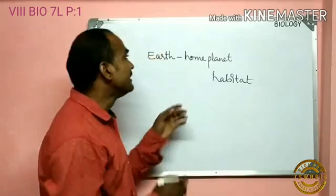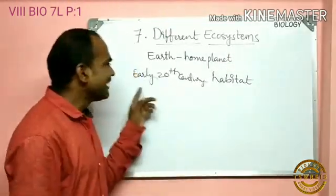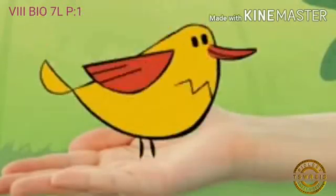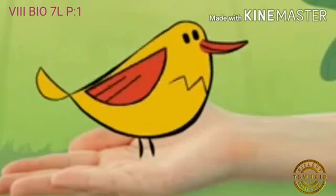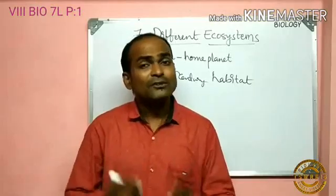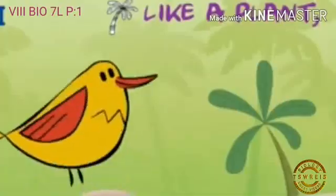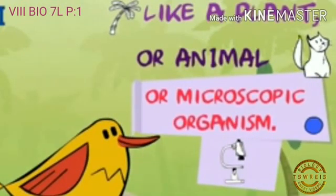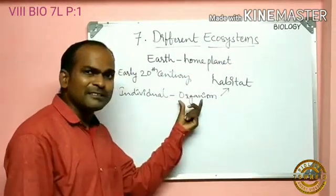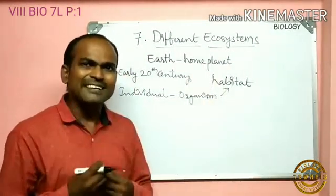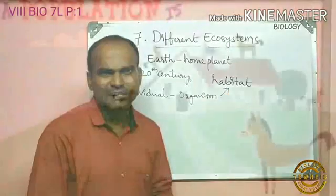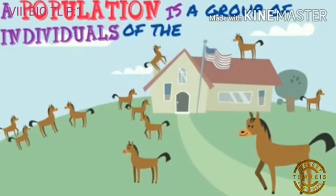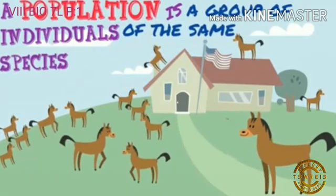In the chapter on different ecosystems, in the early 20th century, people were studying the interrelationships in nature — mainly of individual organisms and those living in the environment. The place where an individual organism fulfills its basic needs is called a habitat. A group of organisms belonging to the same species forms a population.